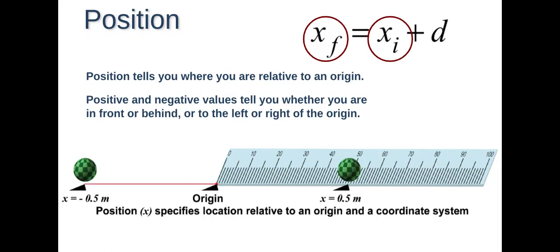So position tells you where you are relative to an origin. Positive and negative values tell you whether you're front or behind or left or the right. So if you're talking about an XY plane, if you're moving positive direction, you're either moving to the right on the X axis, or you're moving up on the Y axis. If you have a negative value, that means you're moving to the left on the X, or you're moving down on the Y axis.